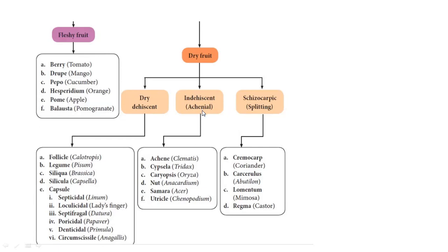These are indehiscent. Indehiscent means like achene, caryopsis, nut, samara, and utricle. Indehiscent means they don't open. Dehiscent means they open and split. Schizocarpic splitting: cremocarp is coriander, carcerulus is Abutilon, lomentum is Mimosa, regma is castor.